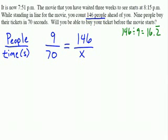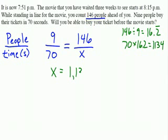Then we also need to do our bottom times 16.2 to keep this as a proportion. So we're going to type in 70 times 16.2, and x will be 1134 seconds.